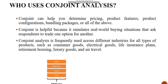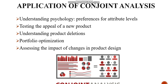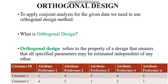Conjoint is helpful because it simulates real-world buying situations, asking respondents to trade one option for another. It is frequently used across different industries for all types of products such as consumer goods, electrical goods, life insurance plans with different premiums, retirement housing, luxury goods, and air travel combinations with different ticket pricing.